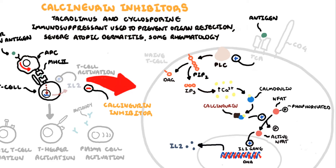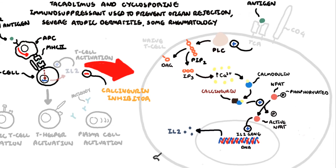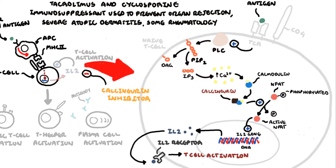Interleukin-2 is released by the T cells, which in turn acts as an autocrine molecule binding onto interleukin-2 receptors on the surface of the T cells. Interleukin-2 will activate this T cell and eventually will initiate the activation of the adaptive immune system.